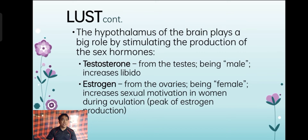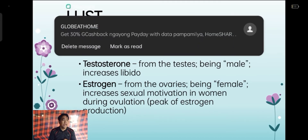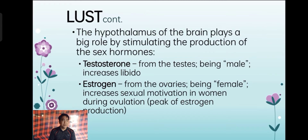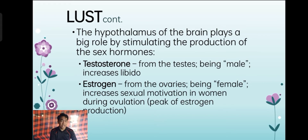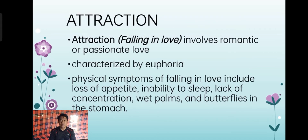The hypothalamus plays a big role by stimulating the production of sex hormones. Testosterone, from the testes in males, increases the libido. Estrogen, from the ovaries in females, increases sexual motivation in women during ovulation — the peak of estrogen production. Testosterone encompasses the male sex hormones, and libido is the drive for sexual orientation or intercourse. Estrogen is for females, located in the ovaries, and increases during sexual activity.